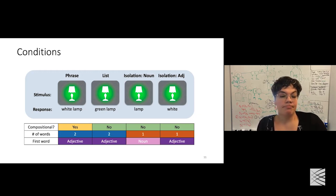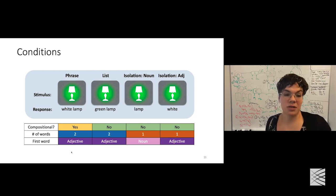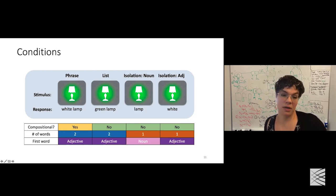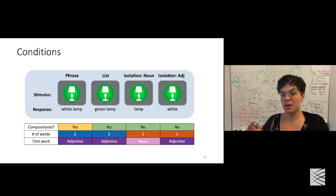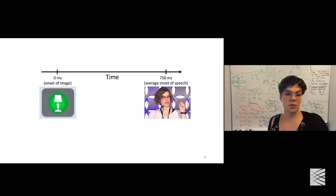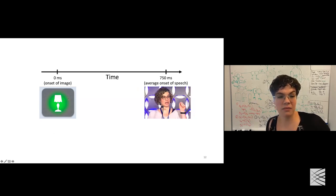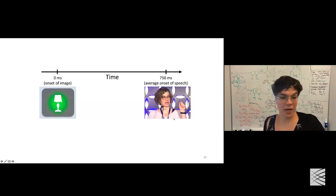The trial starts at zero milliseconds with the onset of the image, and on average people say the phrase or word at about 750 milliseconds — that's the average onset of speech. The questions we can ask are: can we see the adjective and noun representation even though you're just planning to say it with no language stimuli in the environment? Can we decode the identity of the adjective and noun, and if so, when? Are there significant differences between our ability to detect the noun versus the adjective?